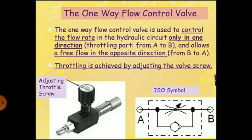The one-way flow control valve is used to control the flow rate in a hydraulic circuit only in one direction — that is, throttling from port A to port B — and allows free flow in the opposite direction, from B to A. Throttling is achieved by adjusting the valve screw.